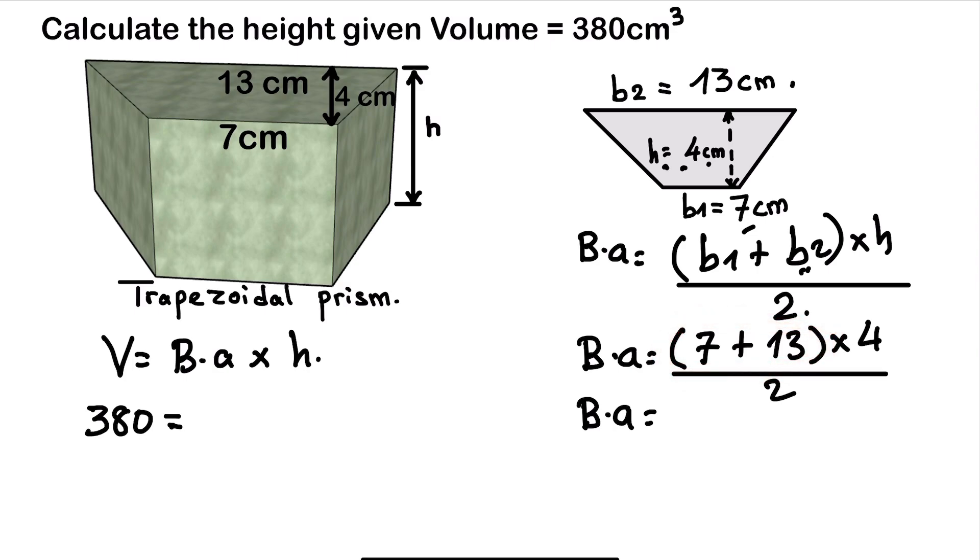7 plus 13 will give us 20 times 4 times the height divided by 2. So 20 times 4 is 80. 80 divided by 2 is 40.